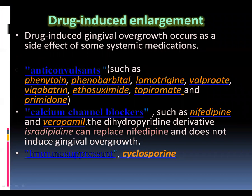Drug-induced gingival enlargement occurs as a side effect of systemic medication. We give a drug for a particular disease — for diabetes, for hypertension, as a painkiller, or as an antibiotic — and that drug acts differently in a particular individual, leading to gingival enlargement. In history, three types of drugs have been seen to create gingival overgrowth.